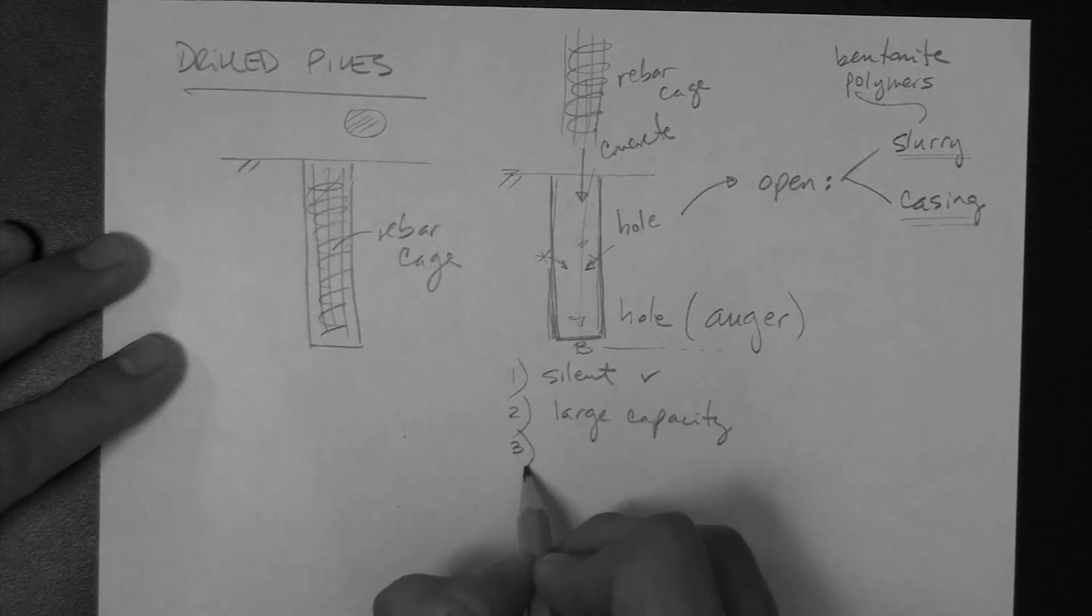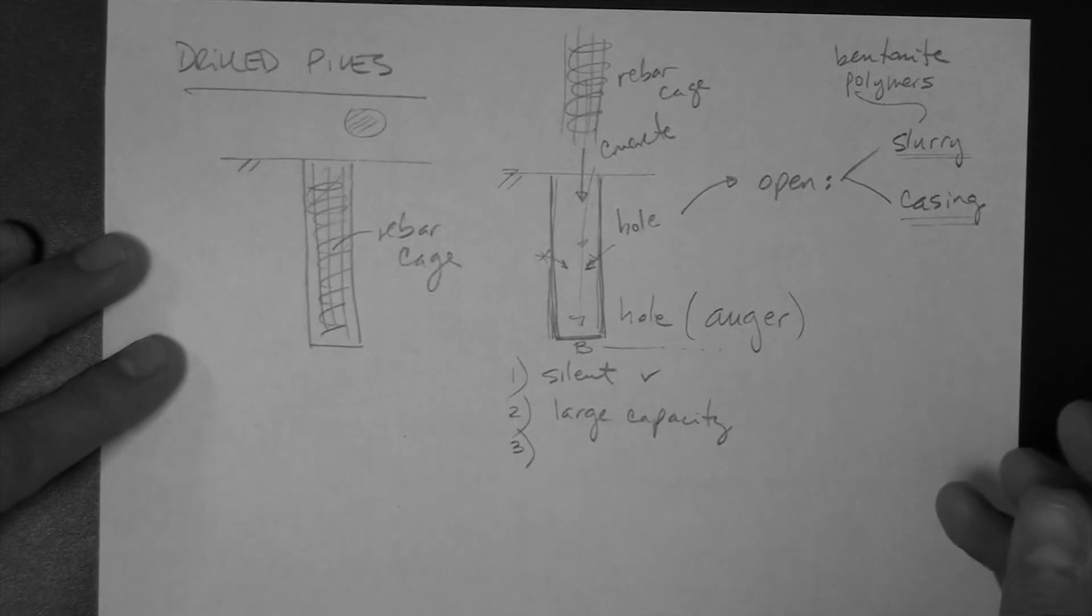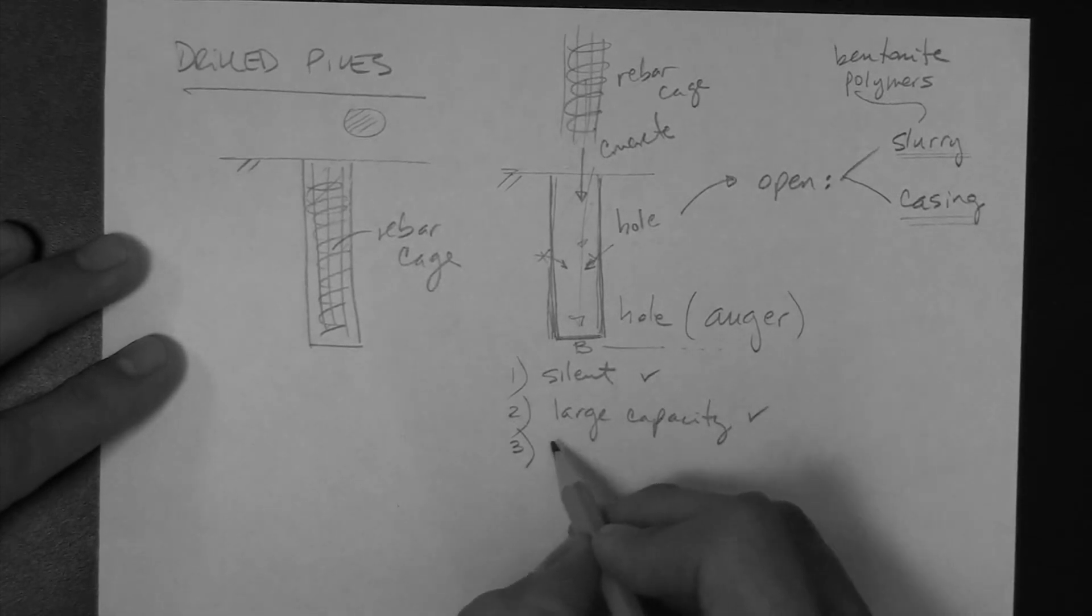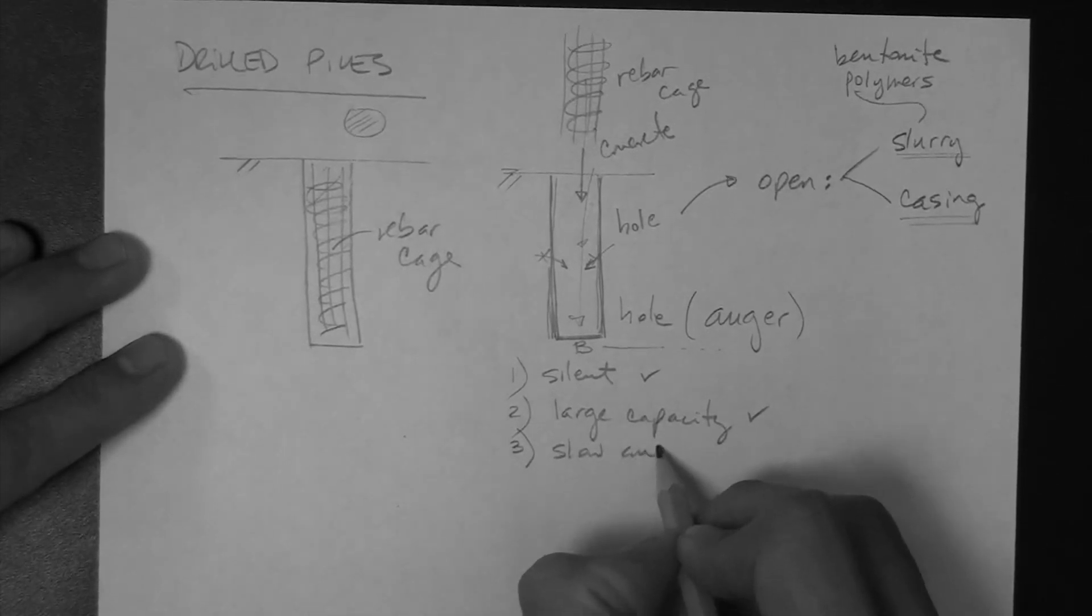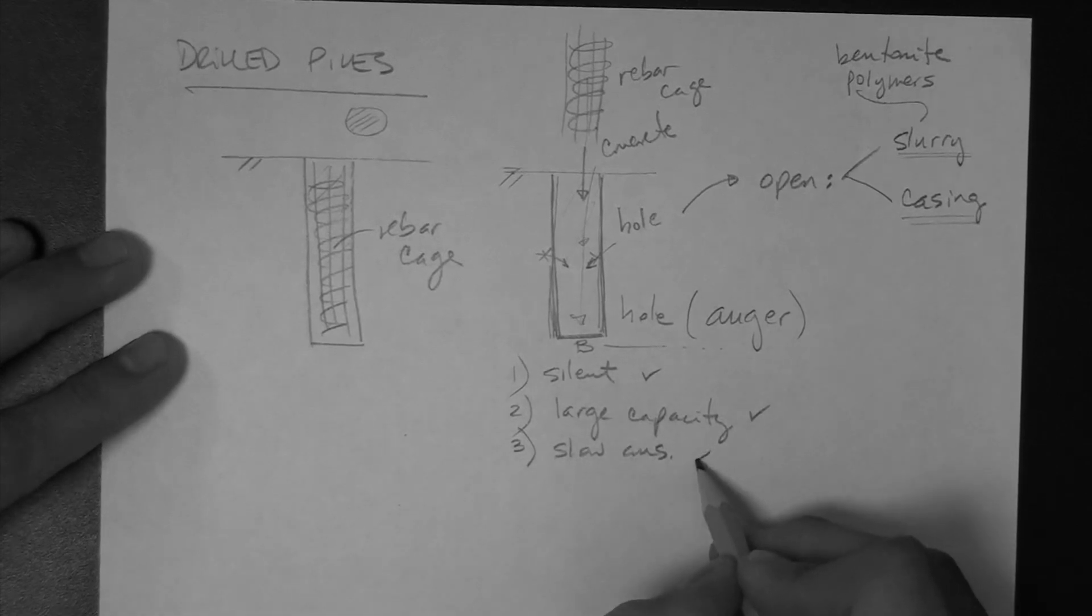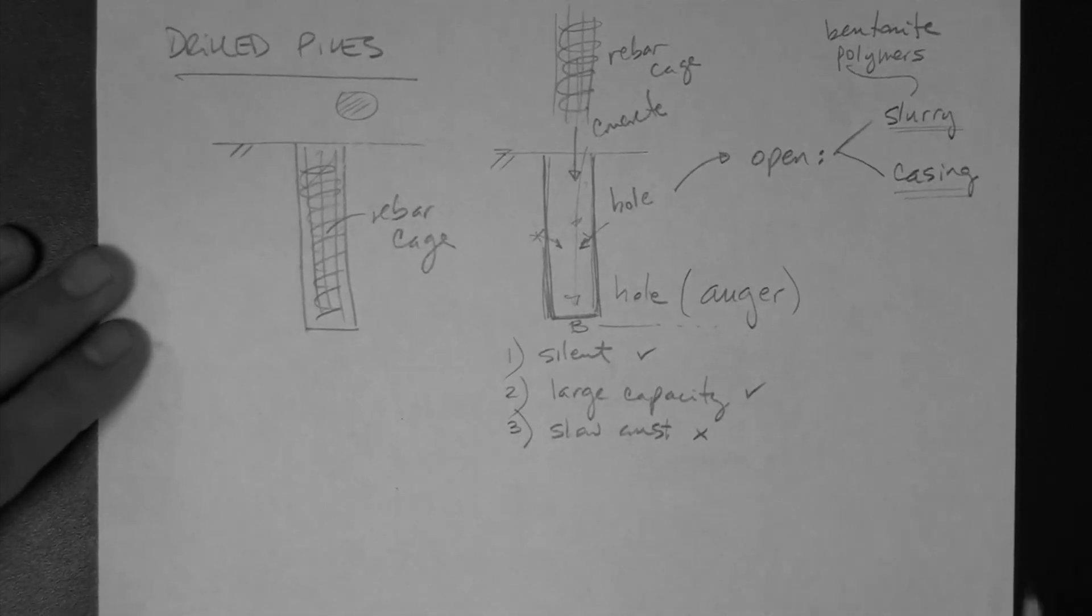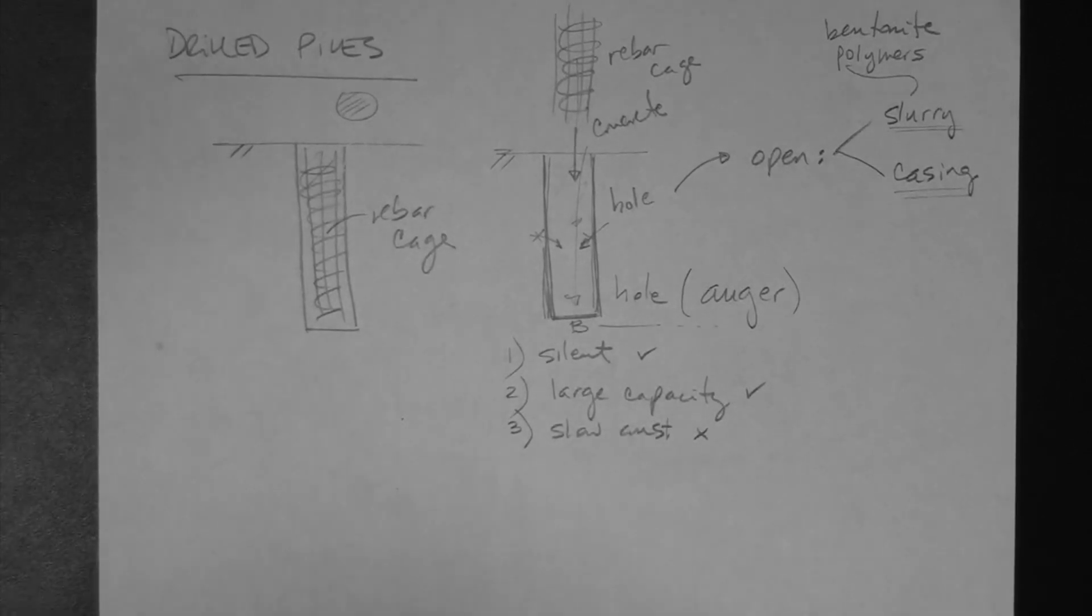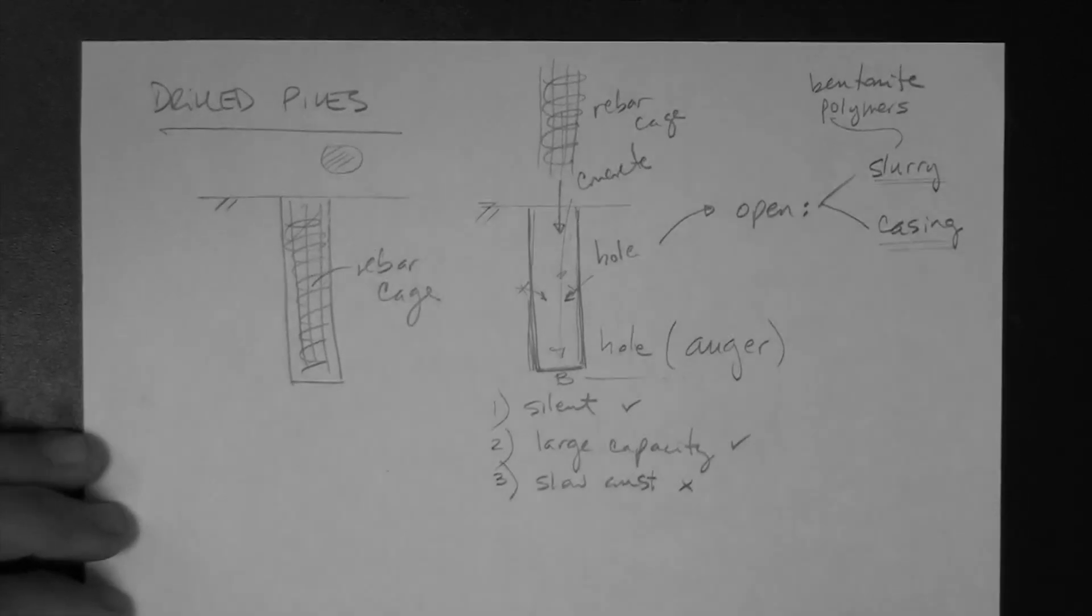And I'll provide some videos on that, or links to. And then number three is essentially that these are more time-consuming, so it's slow construction, relatively. That is relative to driven piles. Slow construction. But there are different companies that do this very quickly, so, you know, that all depends on the cost and the cost-benefit ratio for the whole project. All right.